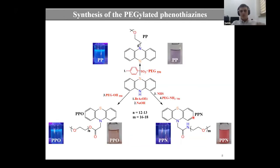The synthesis pathway was done using three different methods. First compound PP was obtained by direct alkylation of the tosylated polyethylene glycol to the phenothiazine core. Compound PPN was obtained from an activated ester of the phenothiazine and the PPO compound was obtained by direct esterification of the phenothiazine acids with the hydroxy polyethylene glycol using coupling agents.